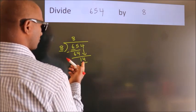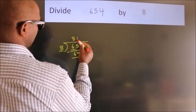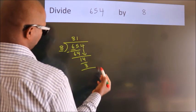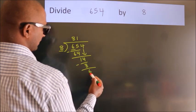A number close to 14 in the 8 table is 8 once, 8. Now, we subtract. We get 6.